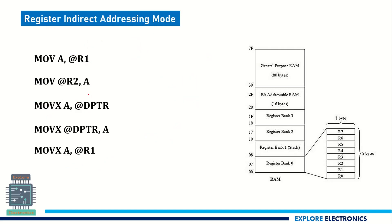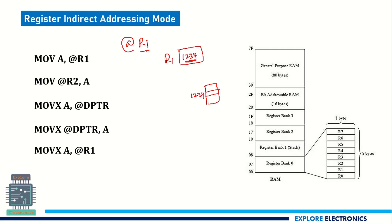Then let us move on to register indirect addressing mode. Here you can observe: if we have the at-sign (@), this will always be register indirect addressing mode — remember this. Here, @R1 means R1 is a register that holds some value like 1234. The at-sign specifies that this value is an address. So 1234 is the address of some other memory location, and whatever content — like the value 10 — is present at that location will be copied to A. This is indirect addressing mode for MOV A.